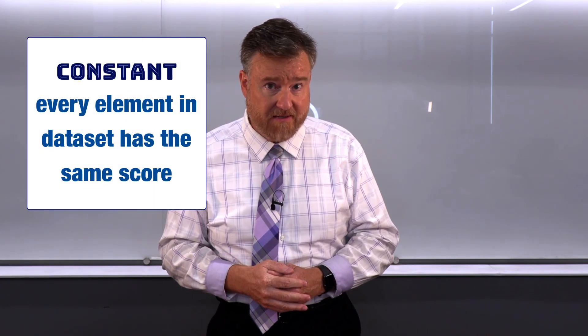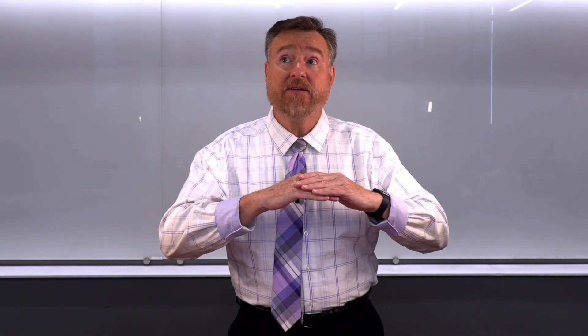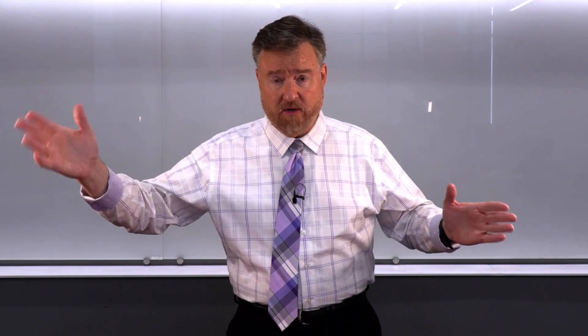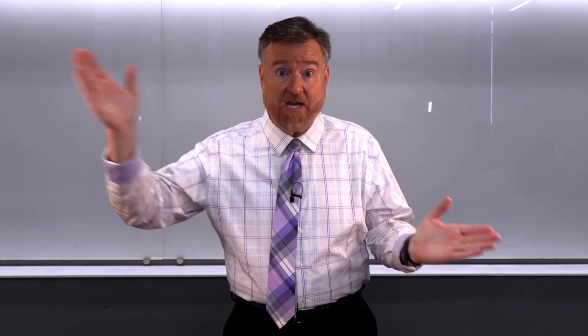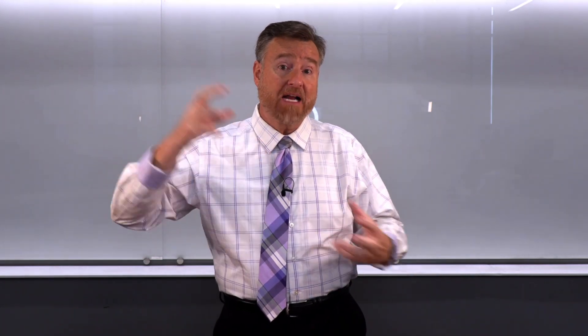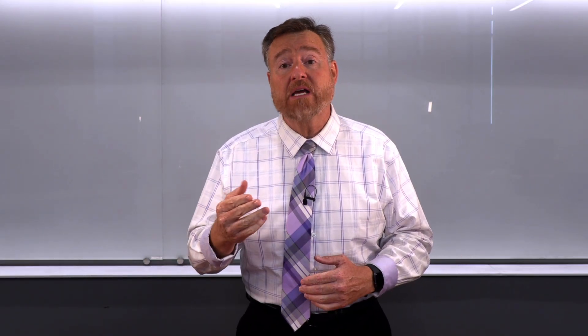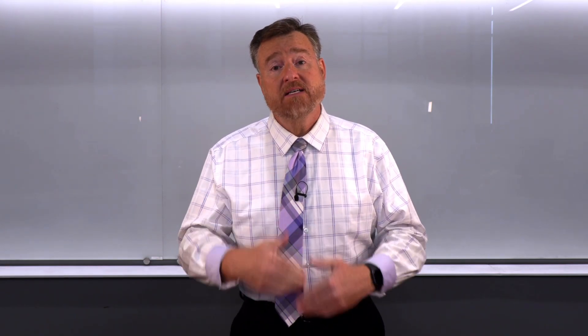The contrast would be something called a constant, in which every person in the data set has the same score. For instance, if we were measuring education, we can find people with low or high amounts of education generally, but for everyone in this class you are a college student, so your level of education is a constant even though in a larger data set it might be a variable. Variables can be coded as numeric or non-numeric: we could write yes or no, or code 1 equals yes and 0 equals no, with 1 being presence and 0 being absence.